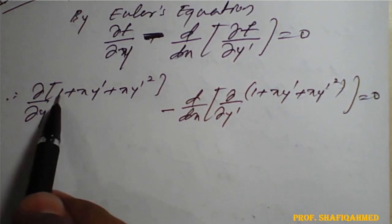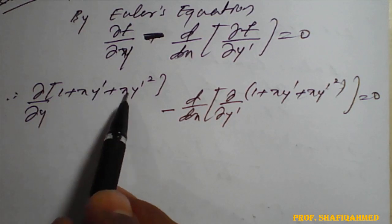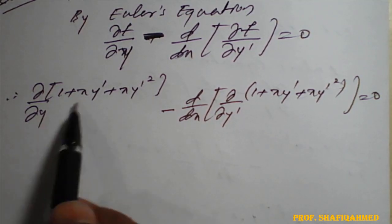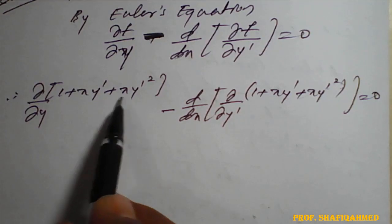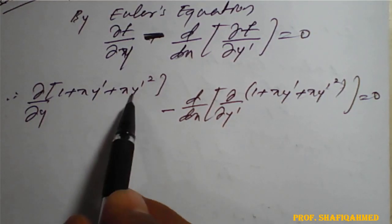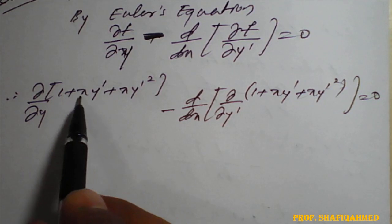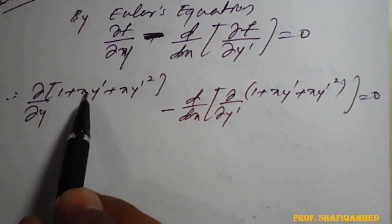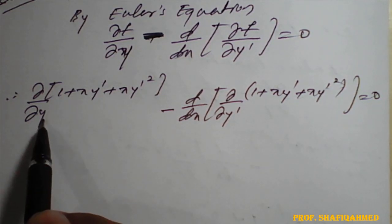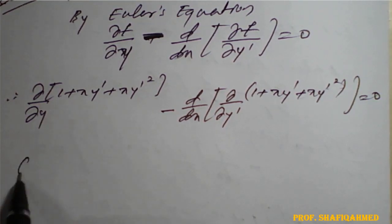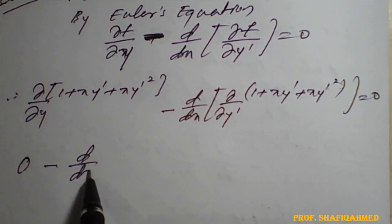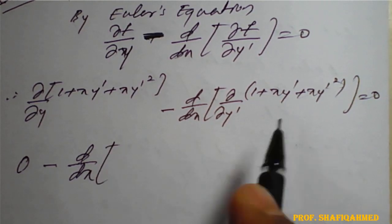So partial derivative of (1 plus x y dash plus x y dash square) with respect to y — here you can see that no y variables are there; other than y variables, all are constant. So constant function with respect to y partial is 0, minus d by dx of.